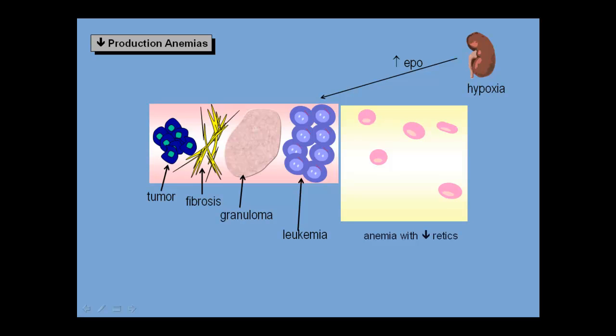Now let's take a quick look at some of the clues that we use to predict what type of decreased production anemia is at play as we construct a differential diagnosis for a patient.